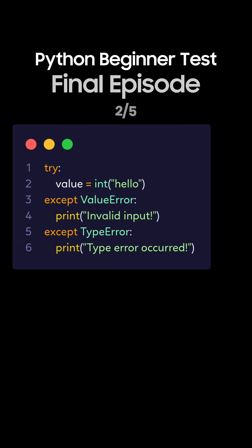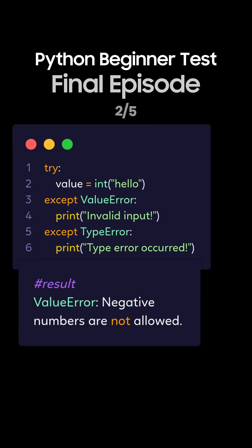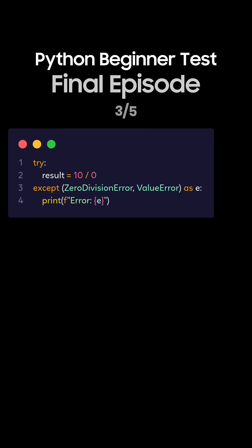Question 2: What's the output of this Python code for handling multiple exceptions? This is the correct answer. The int hello will raise a ValueError, and the except ValueError block will catch it and print invalid input.